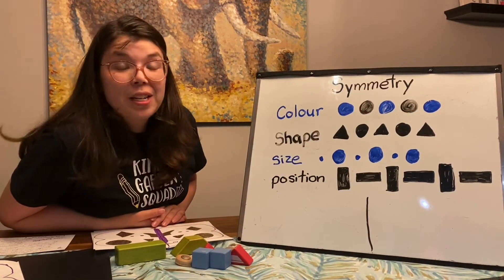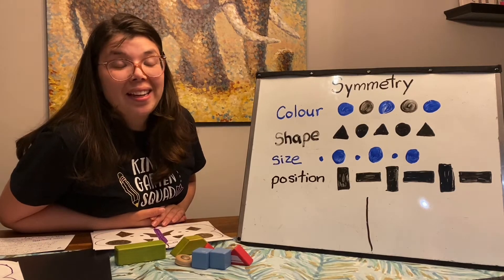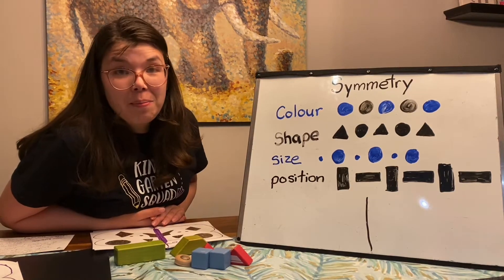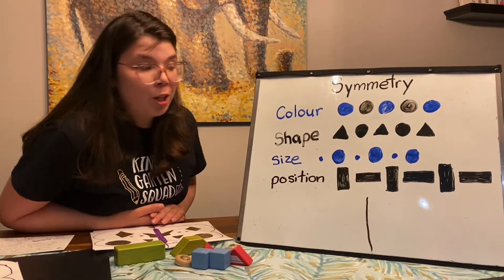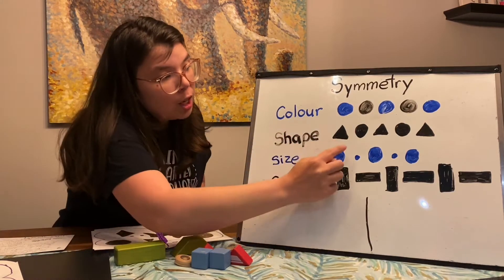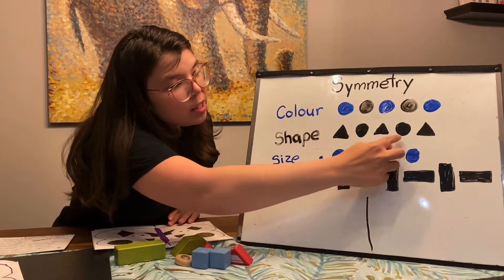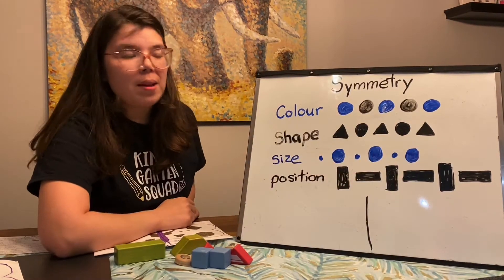You'd also need to know your shapes in kindergarten. So I've made another AB pattern with the shape changing: triangle, circle, triangle, circle, triangle. That's another AB pattern: A, B, A.